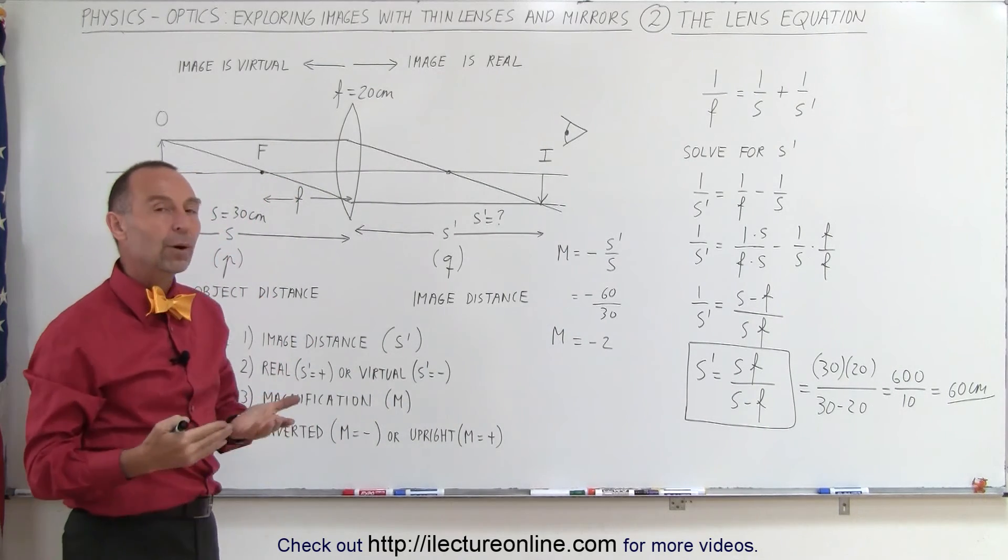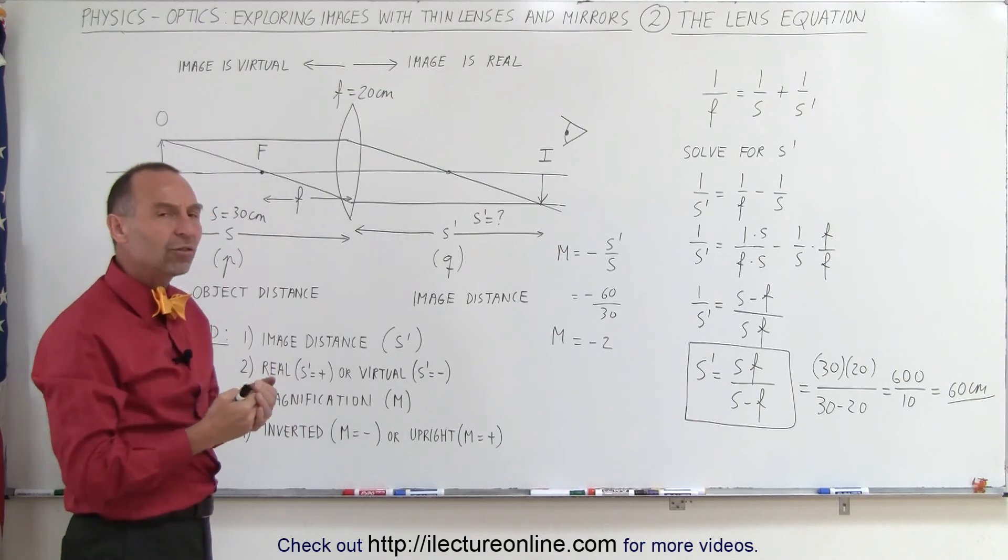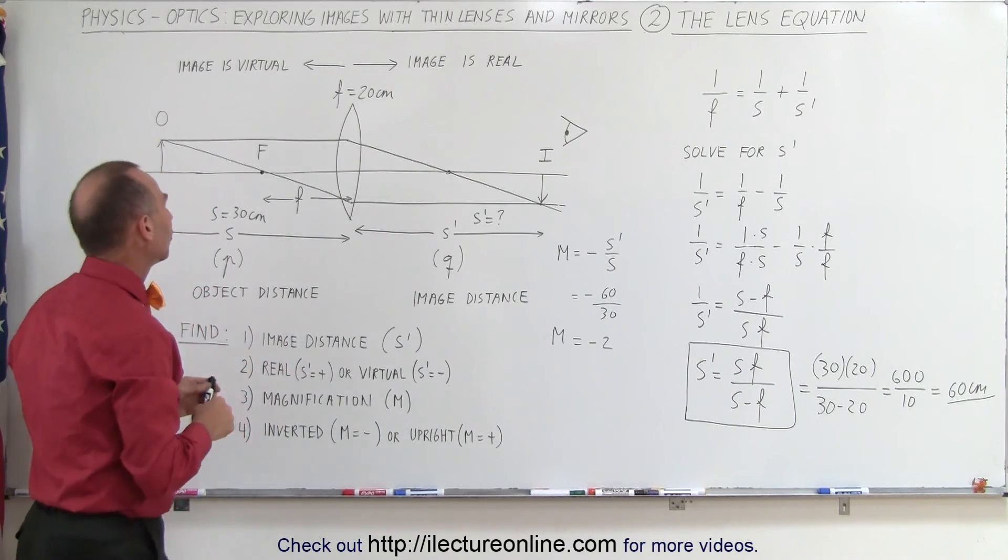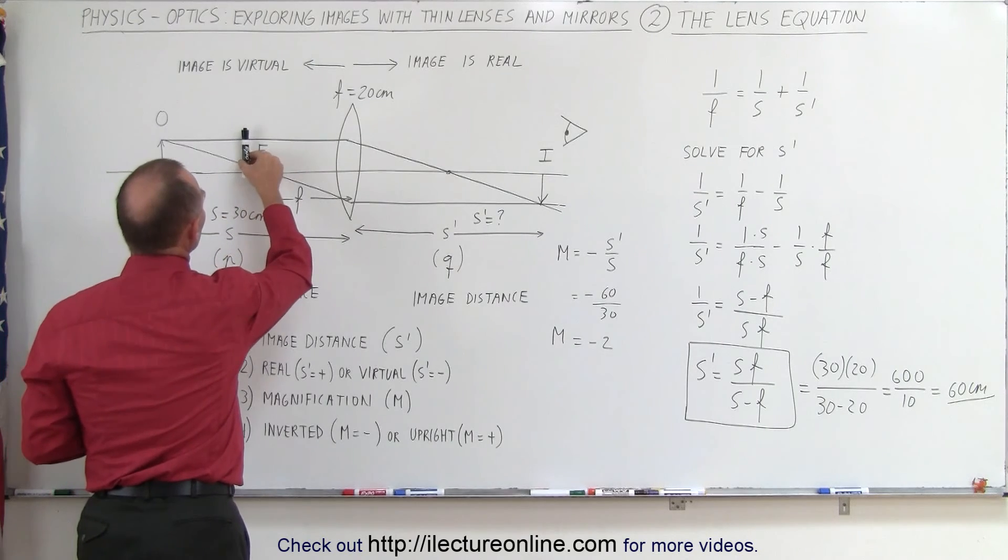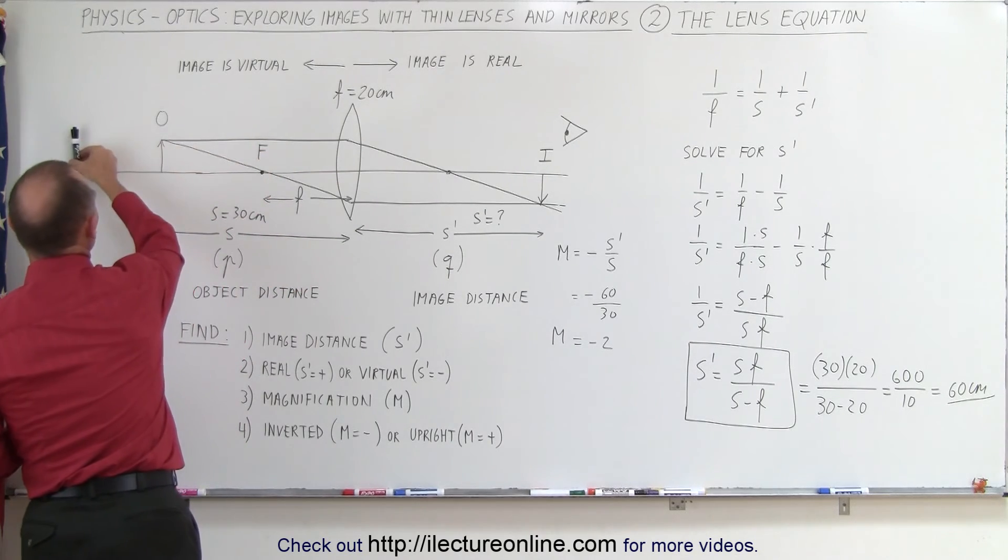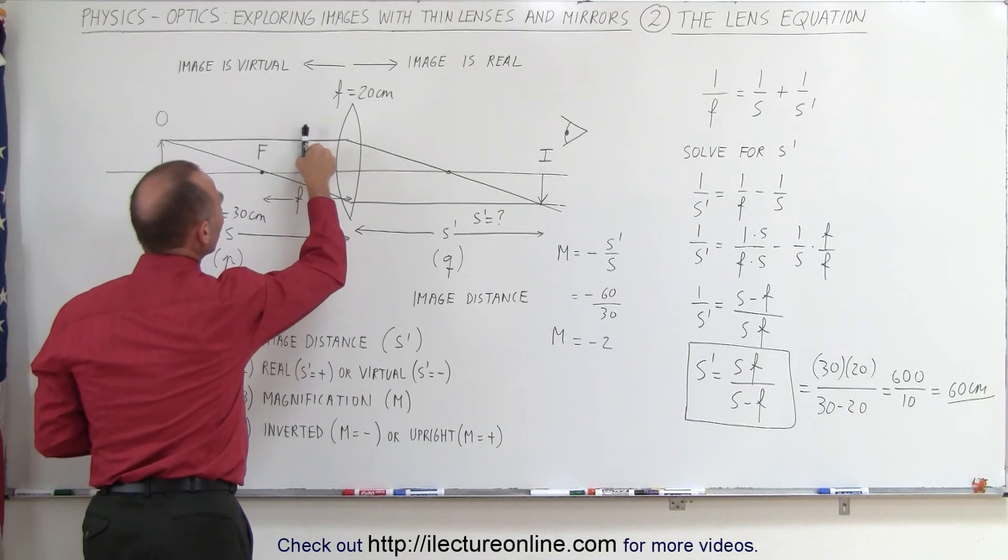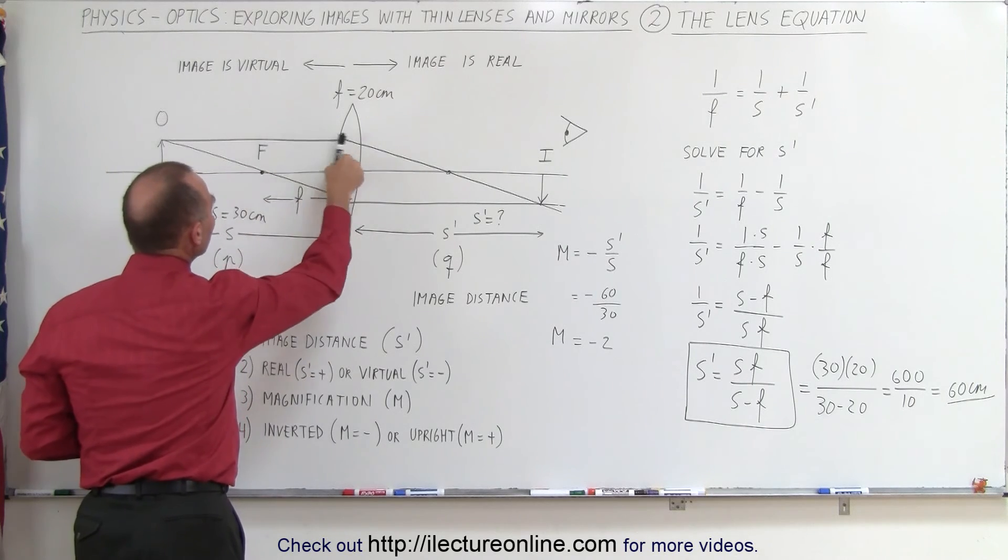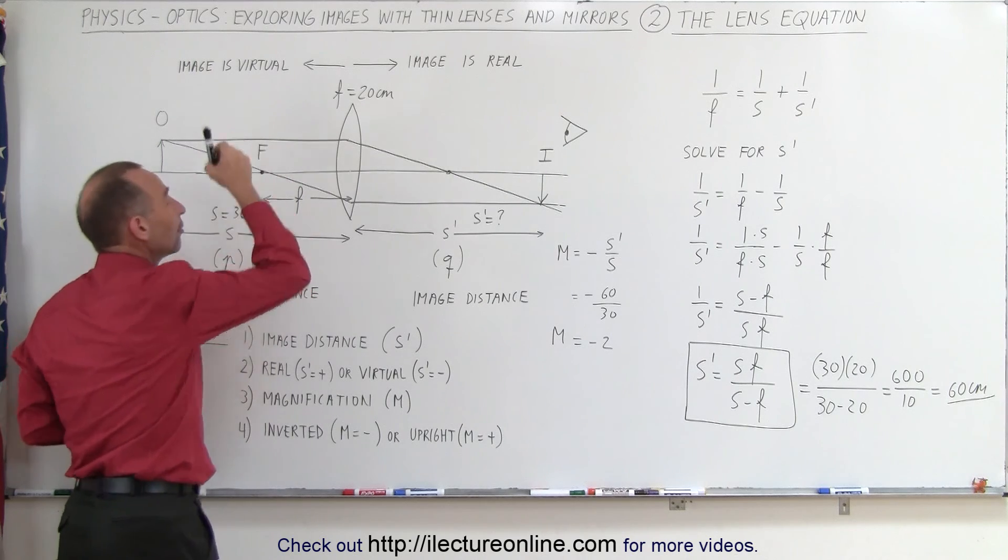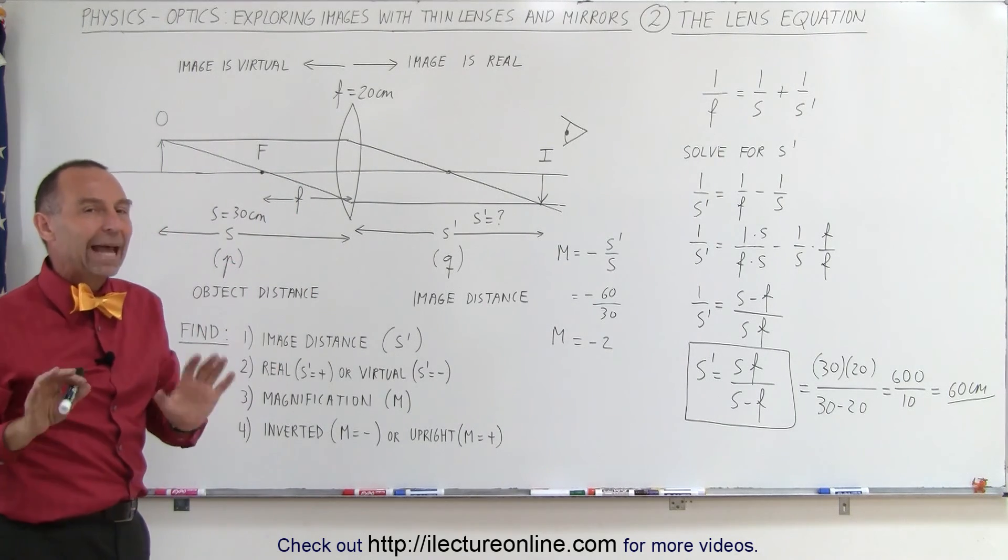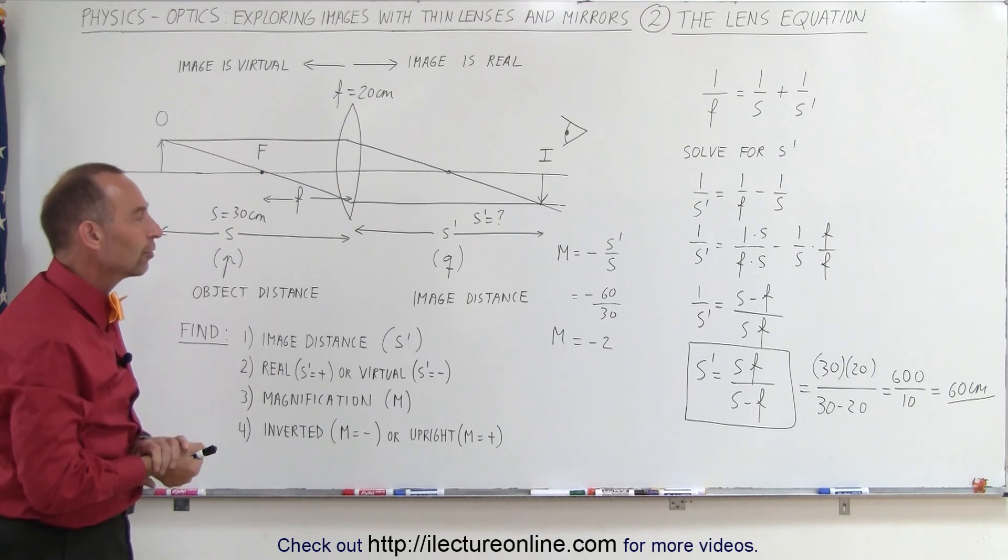But this is typically what we're asked to do. Now what's the most confusing part is to realize what happens to the image when the object moves closer to the focal point or farther away from the focal point or ends up inside between the lens and the focal point and moves back and forth between the two. And what happens to the image when the object is right on top of the focal point and so forth. We'll answer all those questions in later videos.